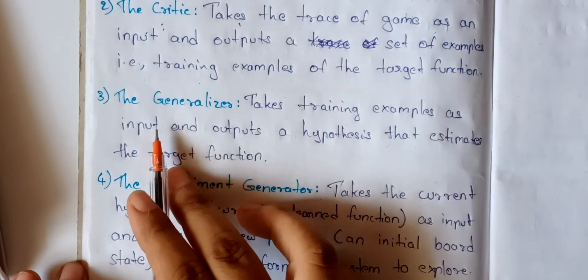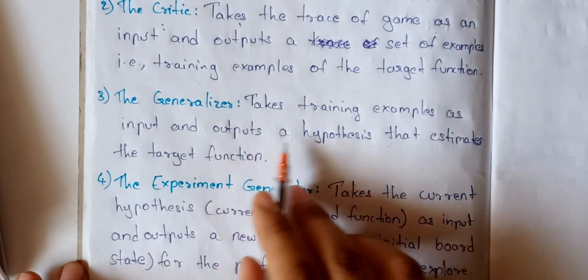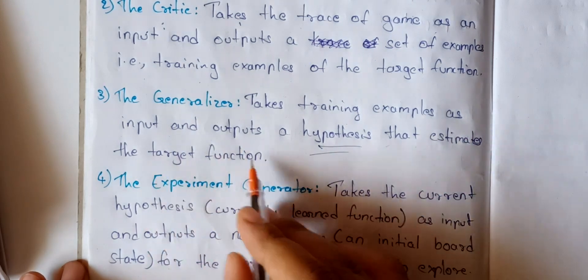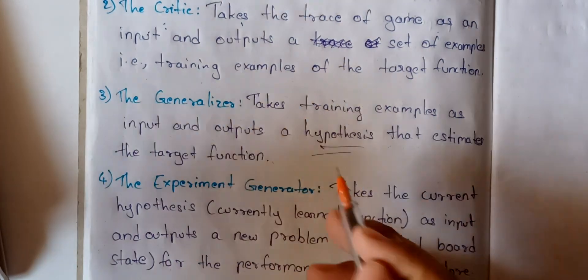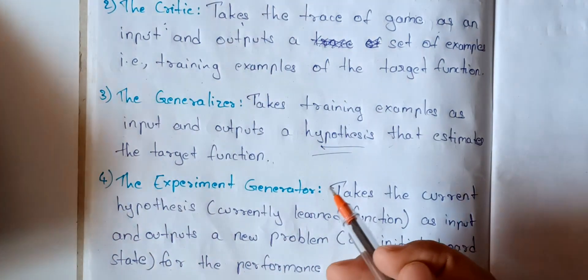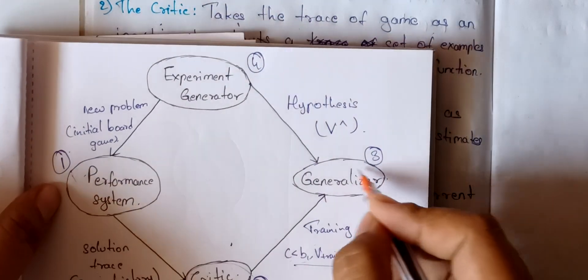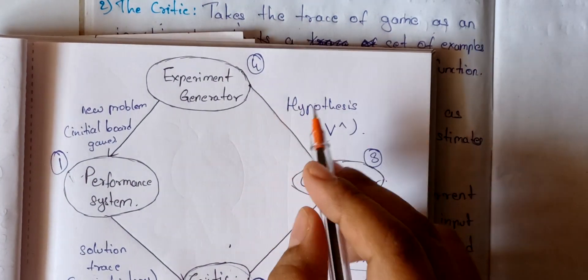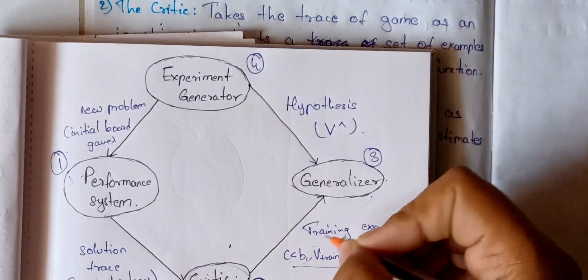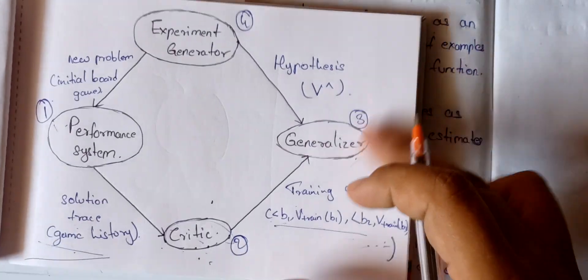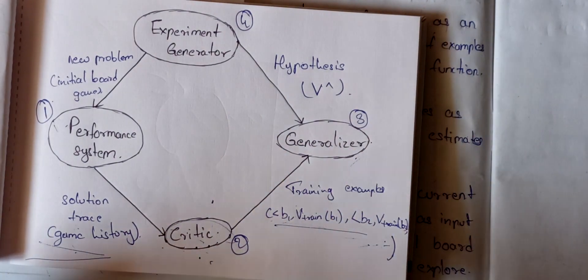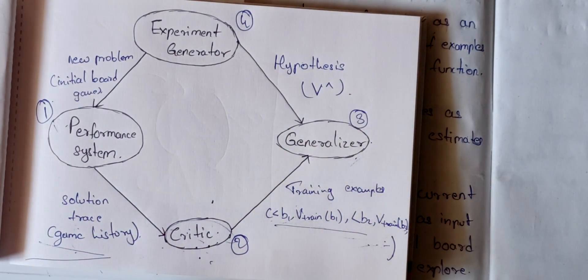The generalizer takes training examples as input and outputs a hypothesis that estimates the target function.